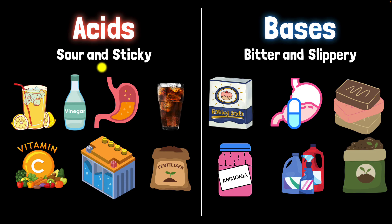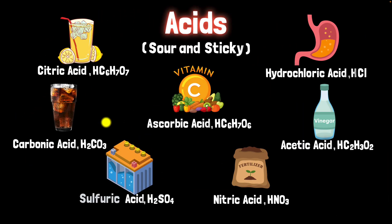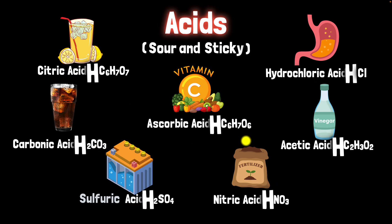Now let's go one step further and be a little more rigorous with our definition. Going back to acids, let's look at the chemical formulae of all of these and see if we can identify something common. One thing you notice is that they all have hydrogen in them. So we could say acids are substances that contain hydrogen. But we could go one step further — if you consider their aqueous solution,